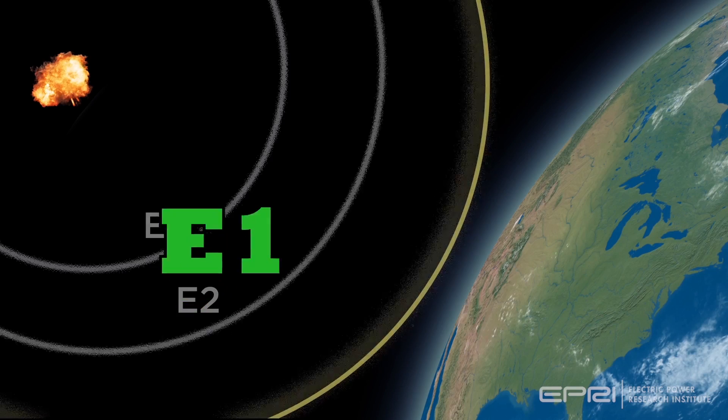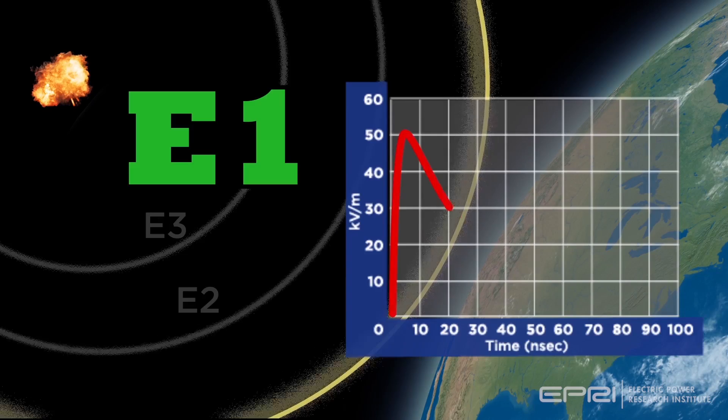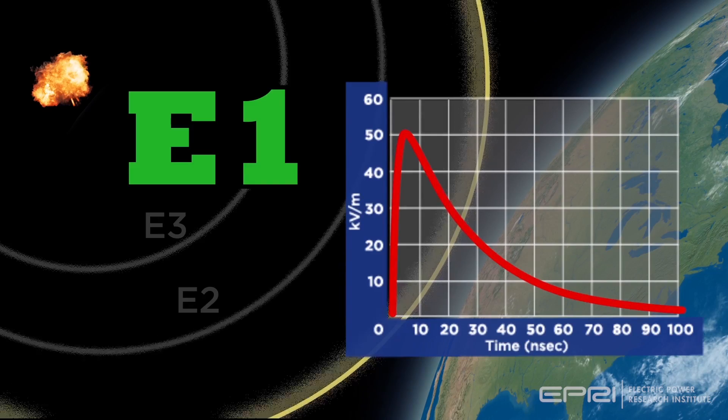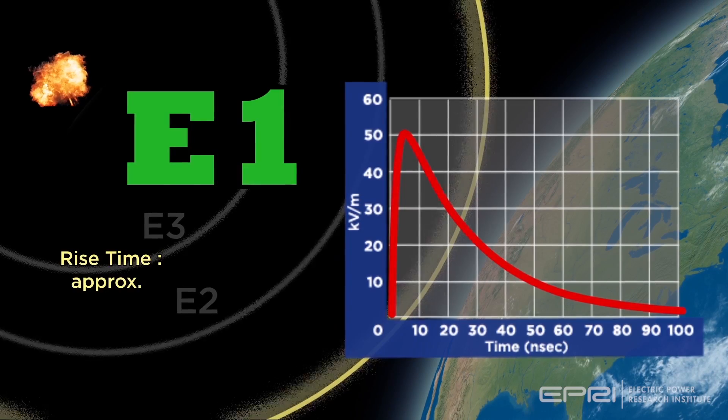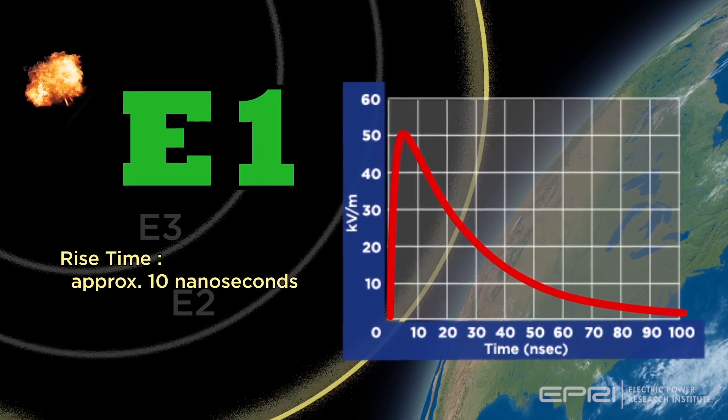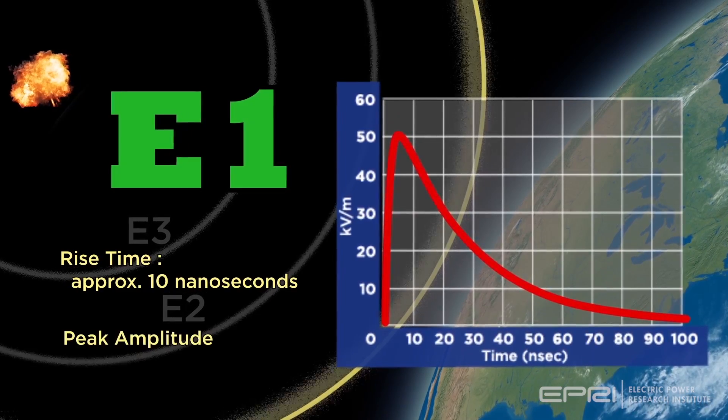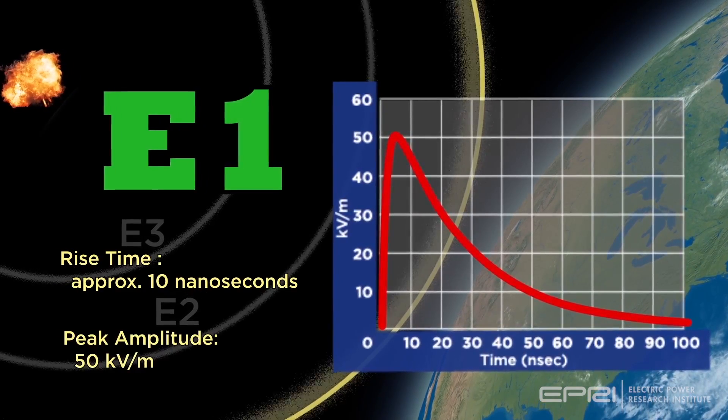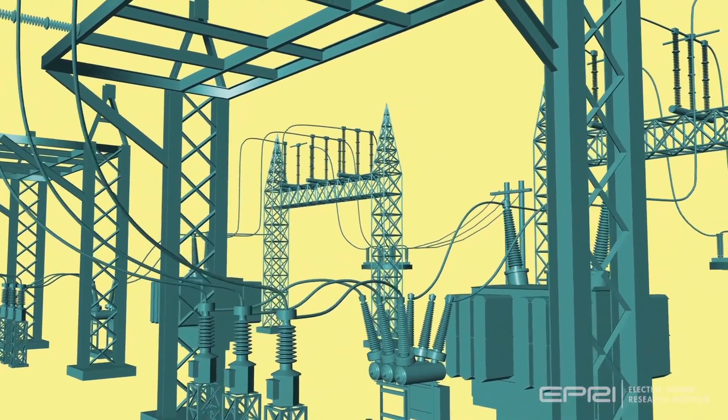The E1 pulse resulting from a high-altitude nuclear explosion is a fast, narrow pulse with large amplitude. The unclassified E1 pulse is characterized by a rise time of approximately 10 nanoseconds, 10 billionths of a second, and peak amplitude of 50 kilovolts per meter.